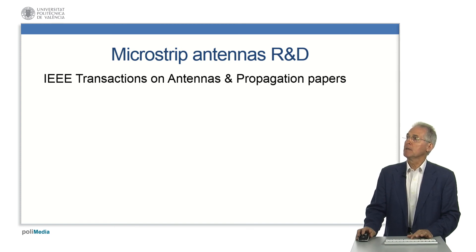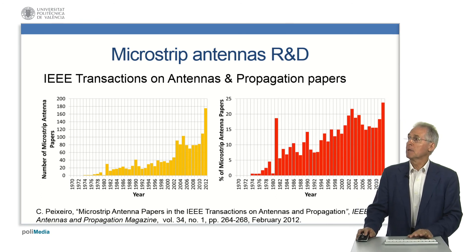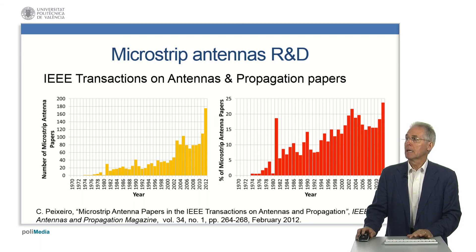Microstrip patch antennas have probably been the most rapidly developing topic in the antenna field in the last 30 years. They have been used in many applications, mainly in telecommunications but also in other areas, with the last major push coming from the wireless communications revolution. Analysis of the number of microstrip antenna papers published in the IEEE Transactions on Antennas and Propagation reveals an oscillatory behavior with a consistent tendency to increase, both in absolute numbers and in overall percentage. We can therefore conclude that research and development in the microstrip antenna field seems to be more active than ever.